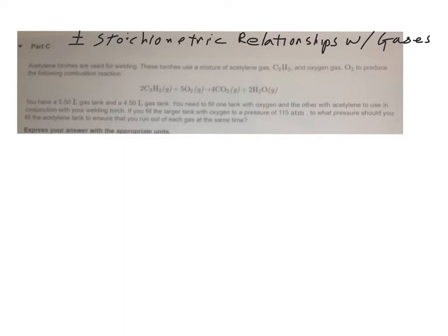You have a 5.5 liter gas tank and a 4.5 liter gas tank. You need to fill one tank with oxygen and the other tank with acetylene to use in conjunction with your welding torch. If you fill the larger tank with oxygen at a pressure of 115 atm, what pressure should you fill the acetylene tank in order to ensure that you run out of each gas at the same time?